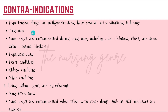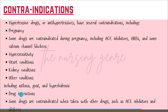Contraindications for anti-hypertensive drugs include pregnancy — some drugs are contraindicated during pregnancy, including ACE inhibitors, ARBs, and some calcium channel blockers. Other contraindications include hypersensitivity, heart conditions, kidney conditions, asthma, and hyperkalemia. Drug interactions are also a concern; for example, ACE inhibitors and aliskiren should not be used together.